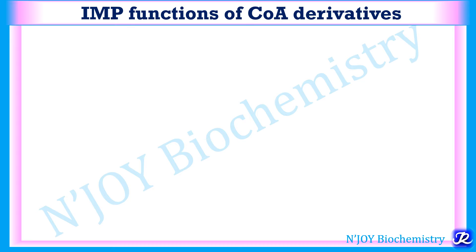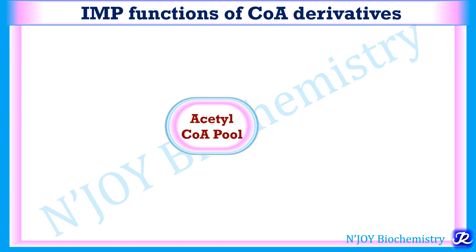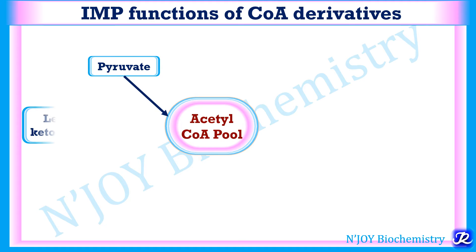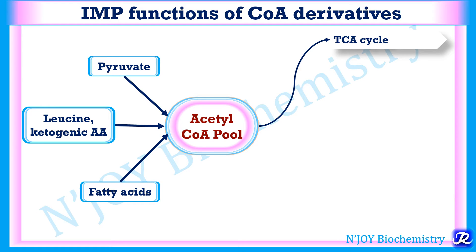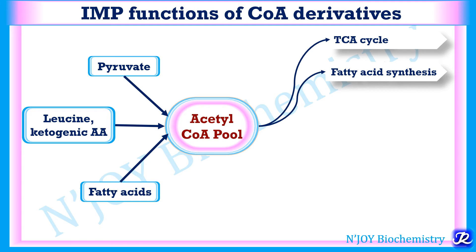Acetyl-CoA is derived from pyruvate by the pyruvate dehydrogenase complex, from ketogenic amino acids (the exclusively ketogenic amino acid being leucine), and from beta-oxidation of fatty acids. The fates of acetyl-CoA include: oxidation through the TCA cycle producing reducing equivalents that feed into the electron transport chain to generate ATP; and it serves as the substrate for fatty acid synthesis, where the first reaction is formation of malonyl-CoA from acetyl-CoA.